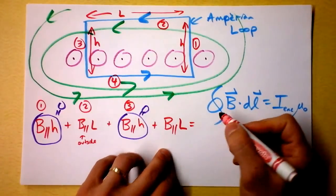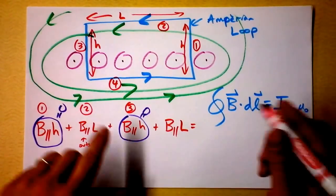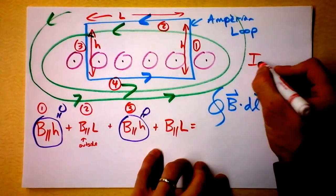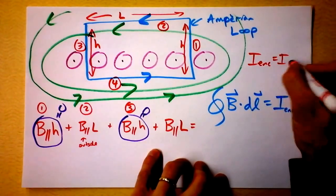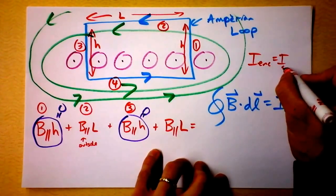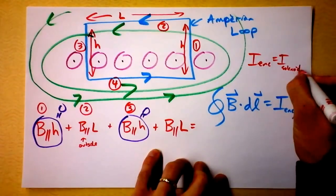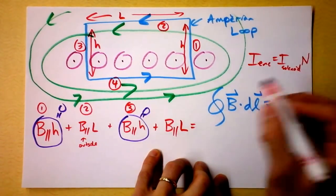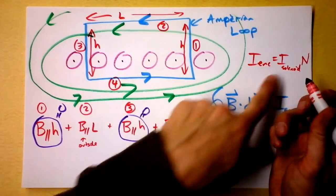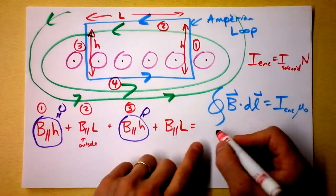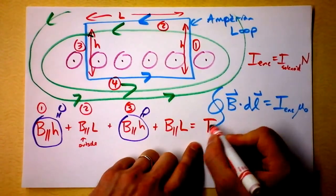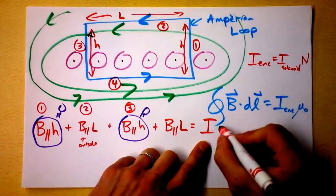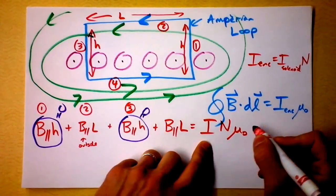All that has to be the enclosed current times mu naught. Now, the enclosed current will be the current in the solenoid times the number of loops that I have enclosed. In this case, that N would be four. So I'm going to say that this is I in the solenoid times N times mu naught.